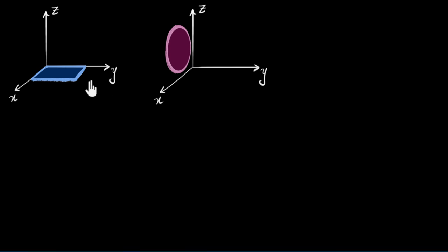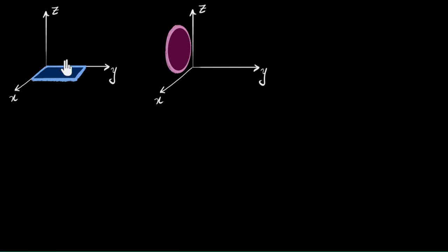When I first learned about area as a vector, I always wondered: why do people do that? Why do they take something as nice as area and convert it into a vector? Why would you even want to do that? And the answer is, it actually helps us in physics.